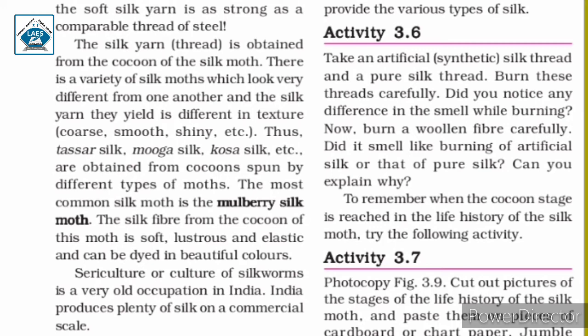The silk yarn or thread is obtained from the cocoon of the silk moth. There are a variety of silk moths which look very different from one another, and the silk they yield is different in texture: coarse, smooth, shiny, etc. Thus, tasar silk, mooga silk, kosa silk, etc. are obtained from cocoons spun by different types of moths. The most common silk moth is the mulberry silk moth, whose silk fiber is soft, lustrous, and elastic, and can be dyed in beautiful colors.